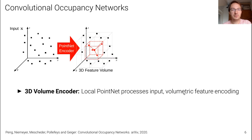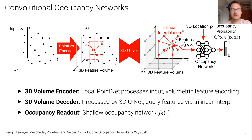We can also use a volumetric representation: instead of projecting onto feature planes, we project into volumetric space. A local PointNet aggregates information within a red box, and then a 3D UNet operates on this coarse 3D representation. A readout occupancy network queries the adjacent voxels using trilinear interpolation to obtain features for a particular location and derives an occupancy probability.